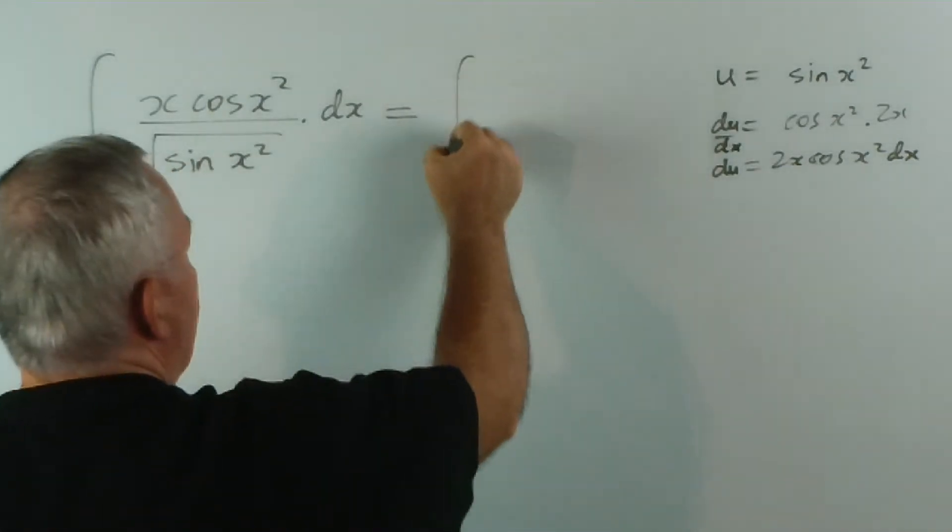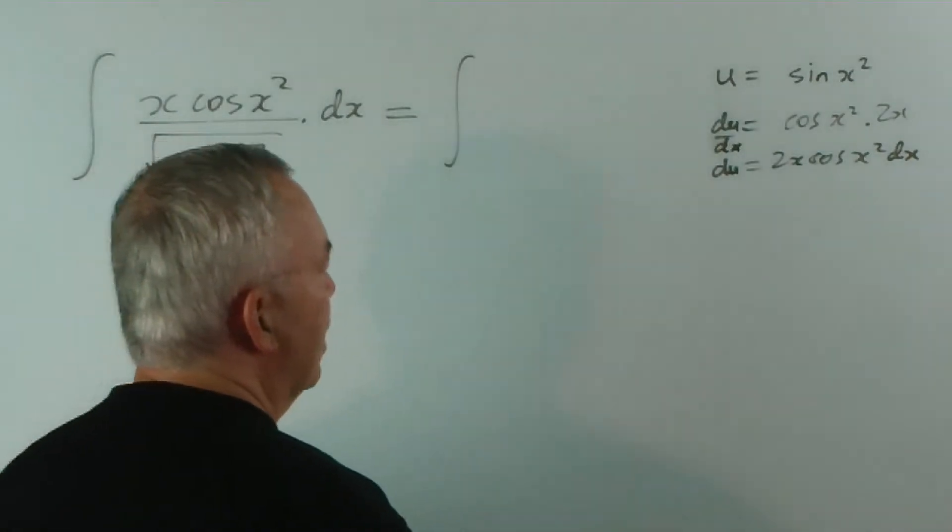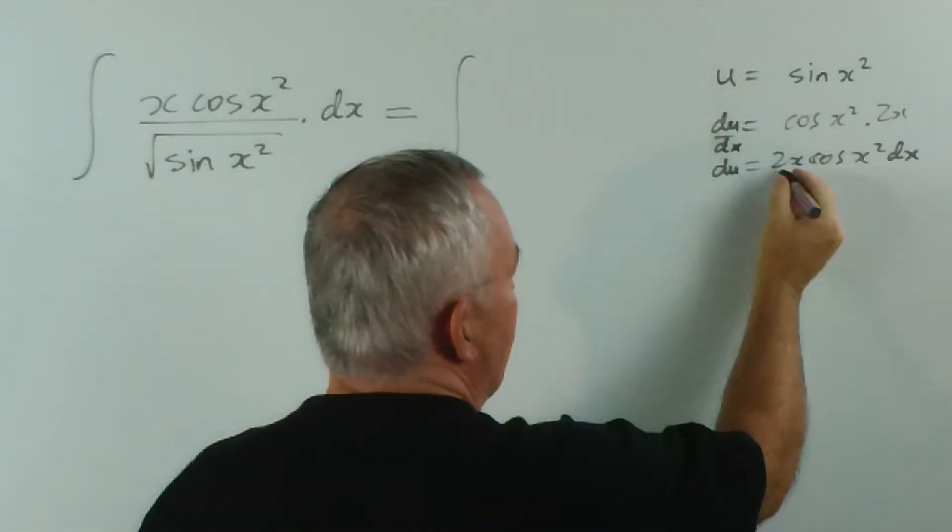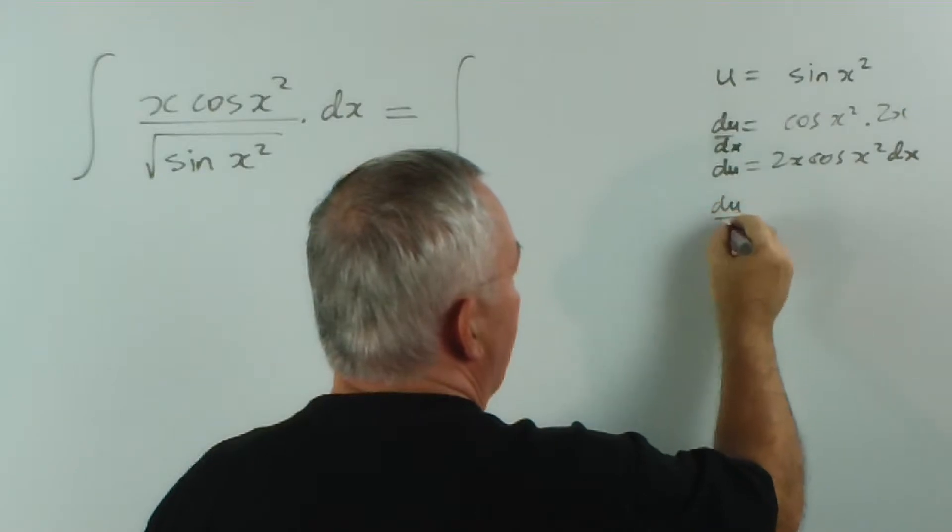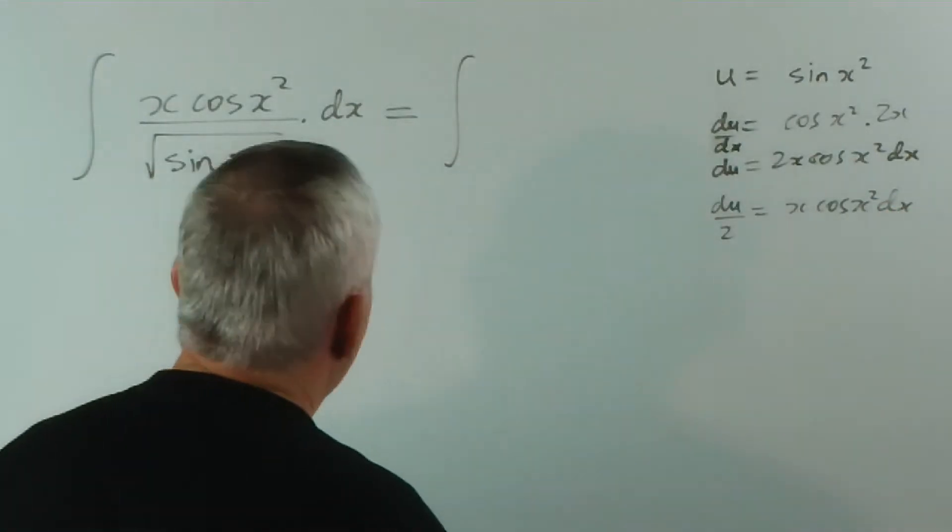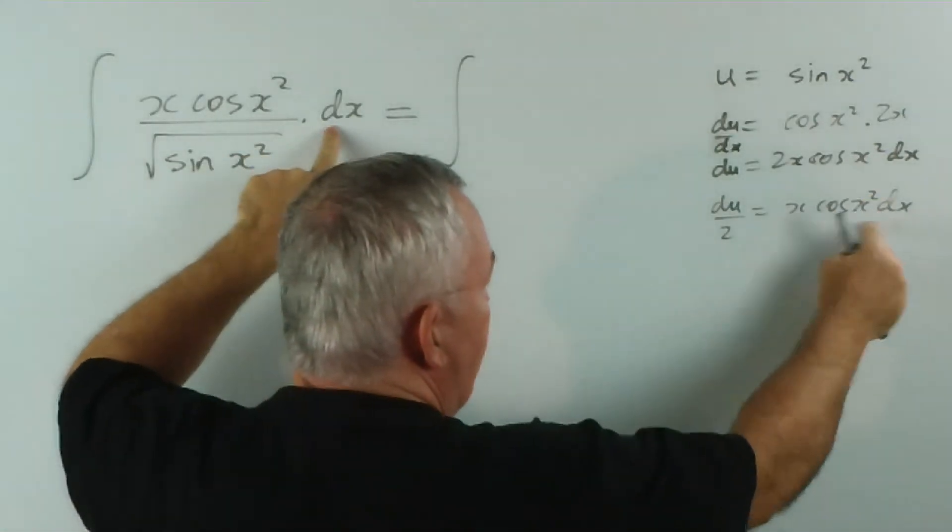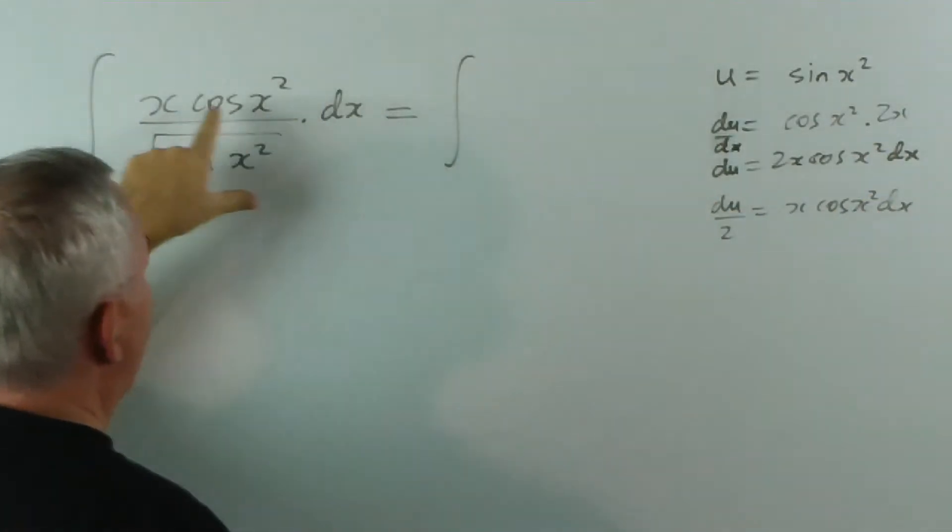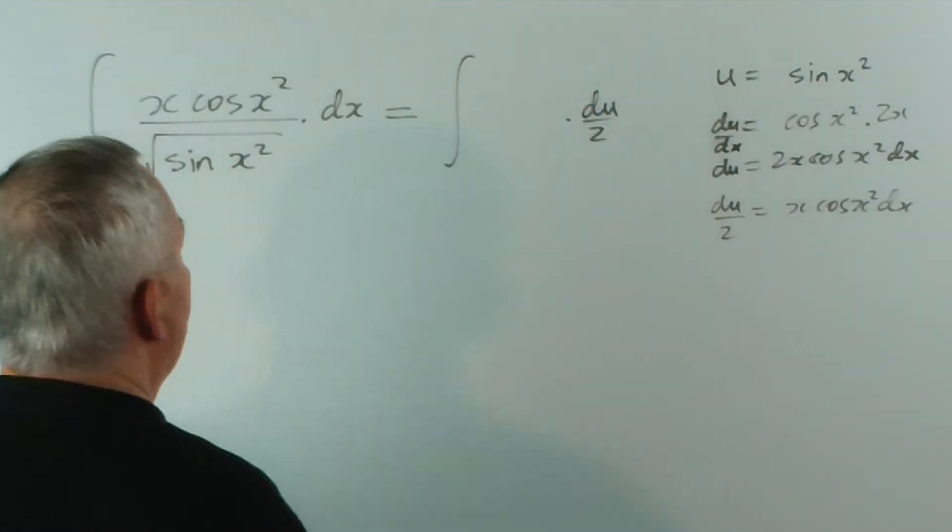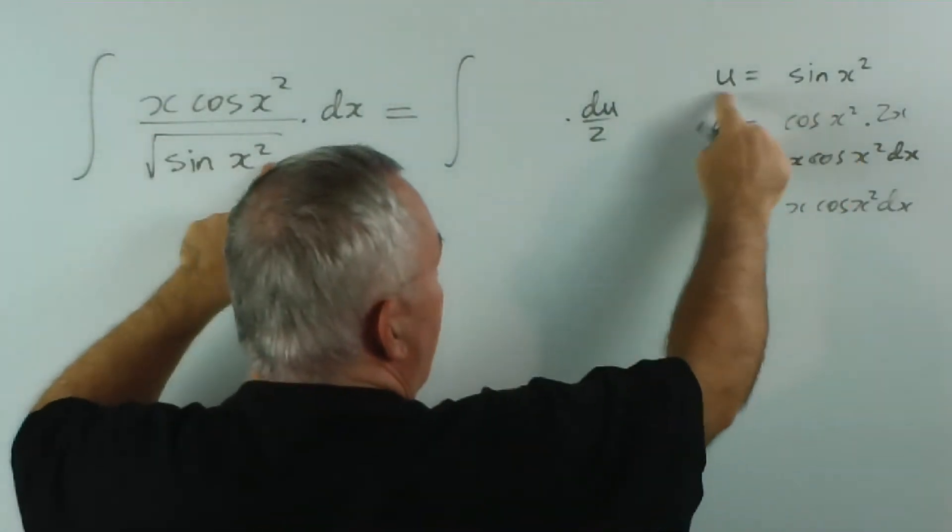Let's see what the integral brings us. By the way, we don't have a 2 here, so I'm going to divide both sides of this by 2 and get du. So now we have x cos x squared dx. I'm going to replace all of that numerator by du on 2.